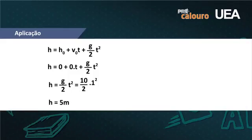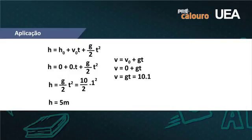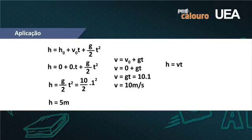A pergunta é sobre a velocidade ao fim do percurso de queda livre: V = V₀ + gt = 0 + 10 × 1 = 10 m/s. Assim, ele terá que percorrer a distância restante de 300 metros com velocidade constante de 10 m/s. Recorrendo a H = V × t, temos 300 = 10 × t, chegando ao tempo de 30 segundos.